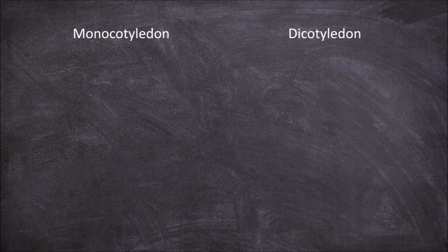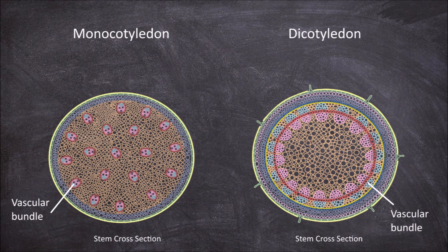The fourth feature is found within the stem and relates to the arrangement of the vascular bundles within these stems. In monocots, there are more vascular bundles present and these bundles have a more scattered arrangement. In dicots, there are fewer vascular bundles and they are arranged in a ring.